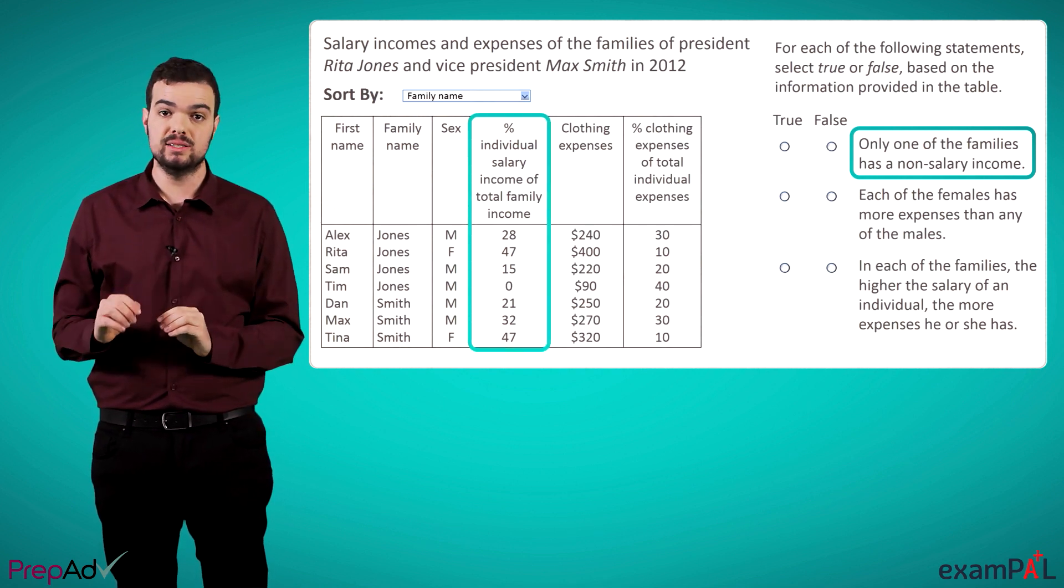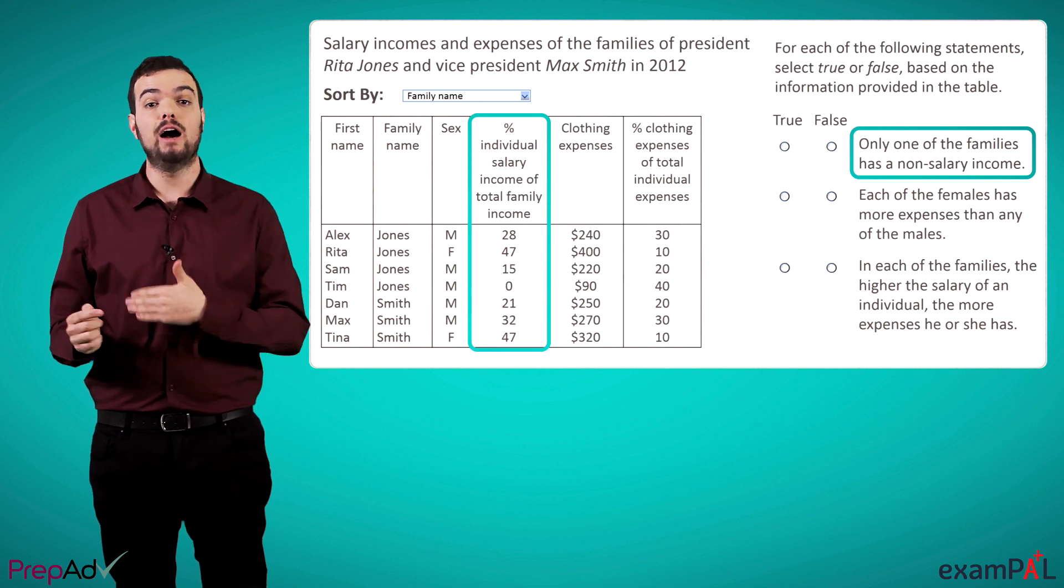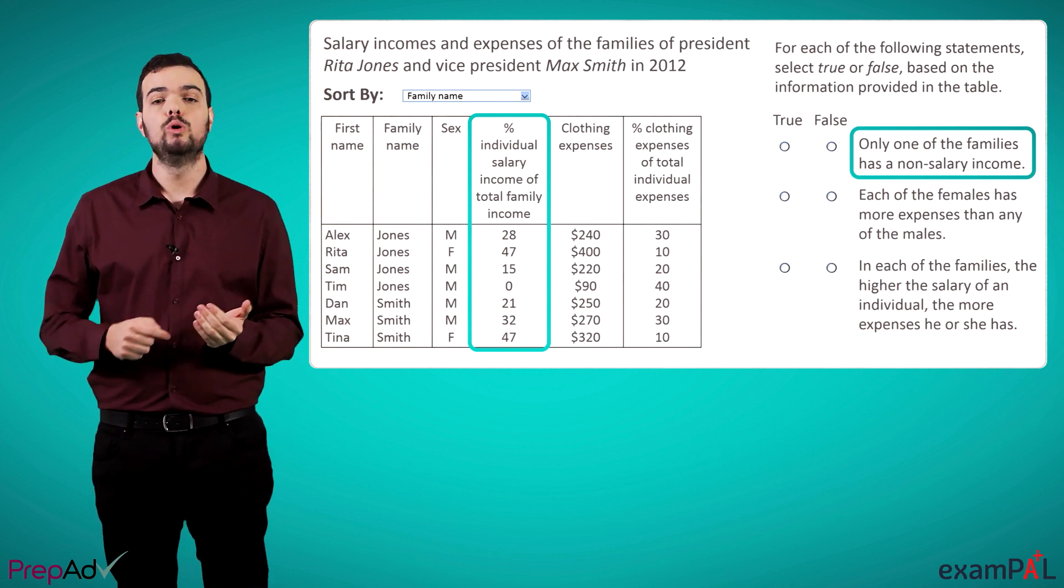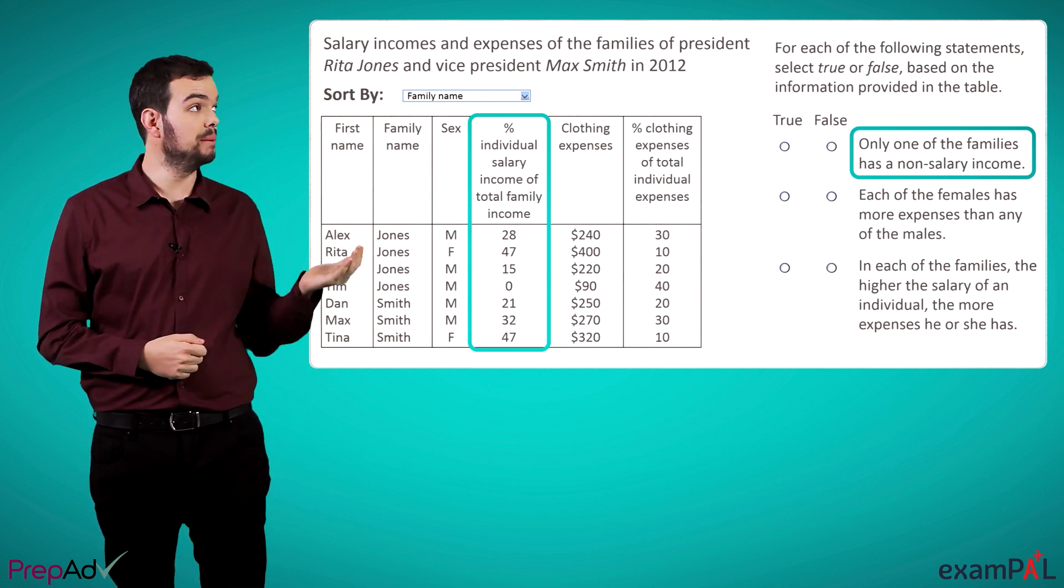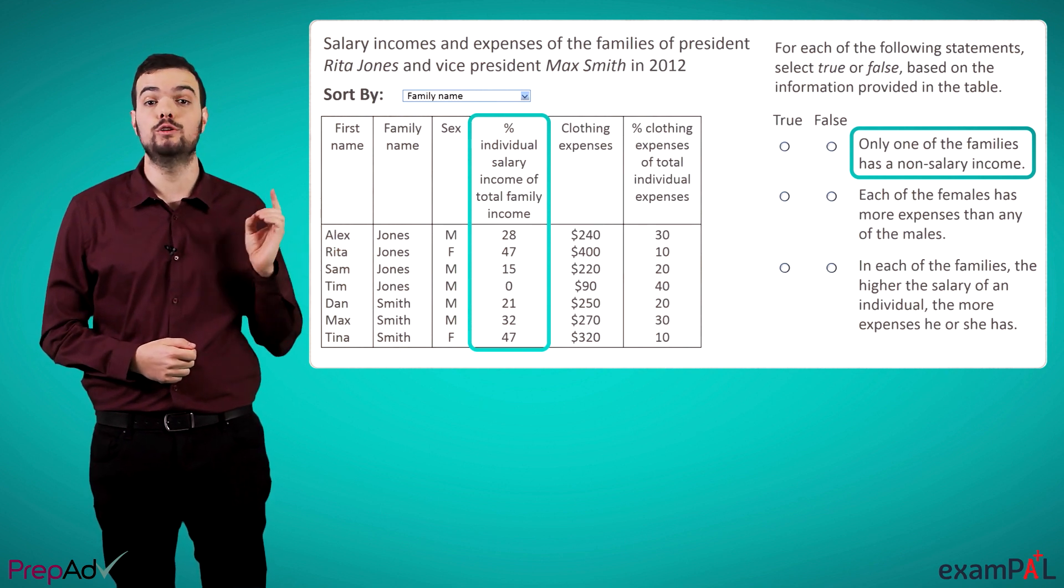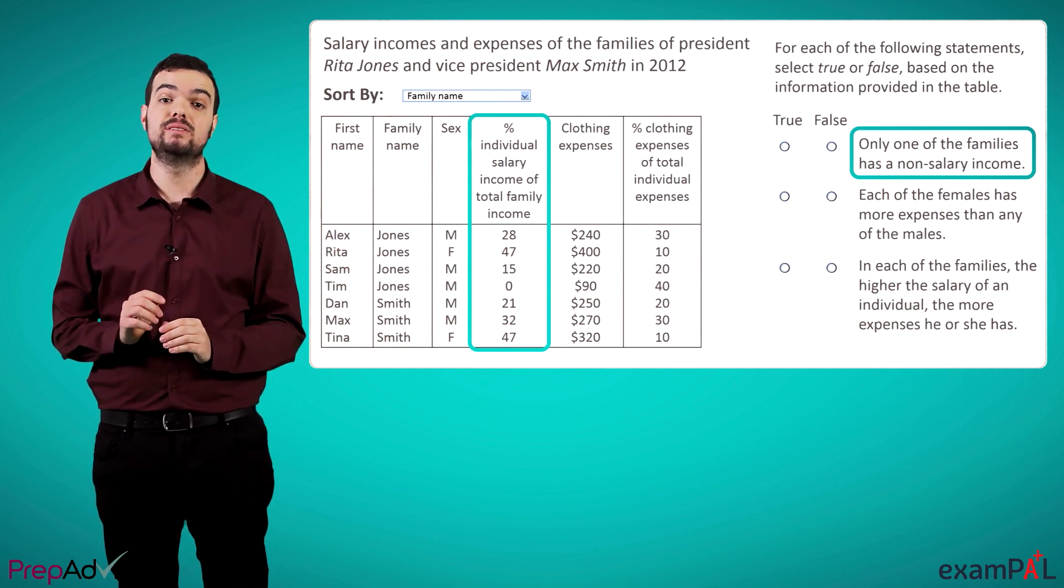By summing up the percentages of each person's salary out of the entire family's income, we can see that the Jones family sums up to less than 100%, meaning they must have some additional income.